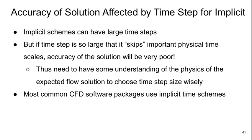For the implicit approach, the stability of the solution should generally be okay even with large time steps, but accuracy is of course affected. If the time step is so large that it skips important physical time scales, the accuracy of the solution will be very poor. So we need some understanding of the physics of the expected flow to choose the time step wisely. Most common CFD software packages use implicit time schemes, but often also have options for explicit schemes.